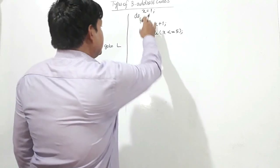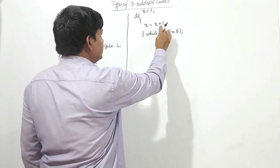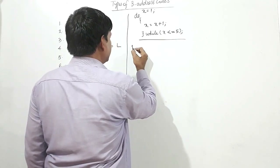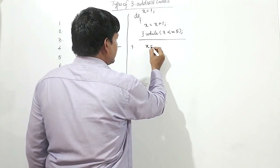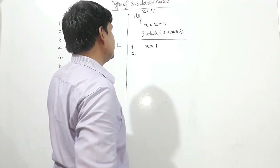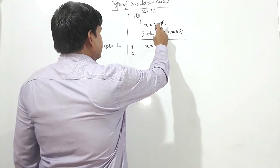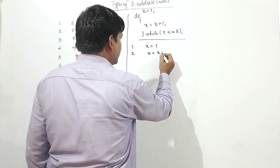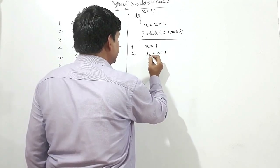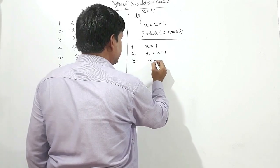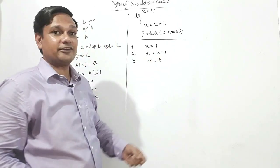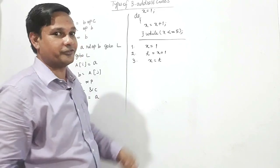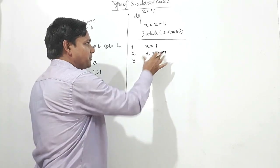Here is a do-while loop: X equal to 1, do: increment X by 1, while X is less than or equal to 5. I will write it in three address code. Line 1: value 1 is assigned to X. Line 2: X is equal to X plus 1 — or T equal to X plus 1 and X equal to T, but X equal to X plus 1 is also valid three address code. This is the optimized three address code.